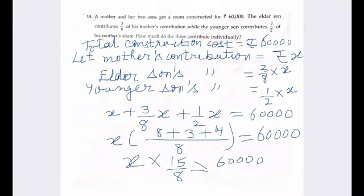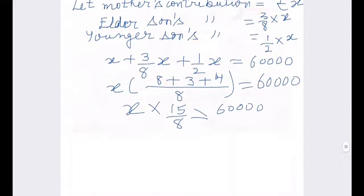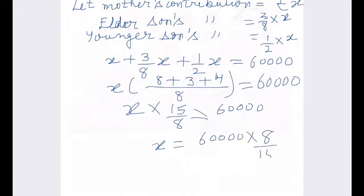So, we can easily find out the value of X from here. The value of X will be 60,000 multiplied by 8 divided by 15. 15. So, 15 ones are 15. 15 fours,